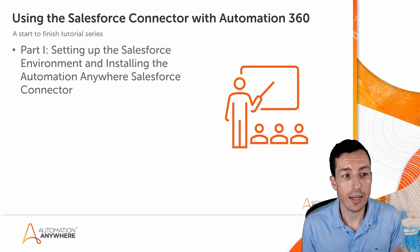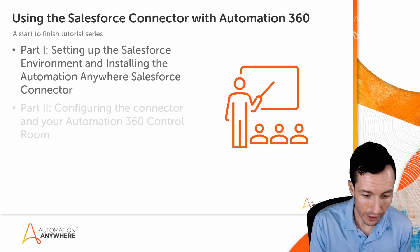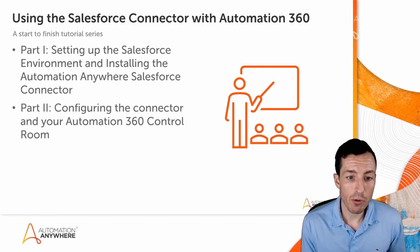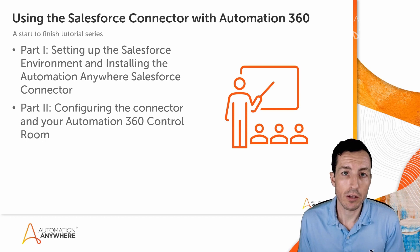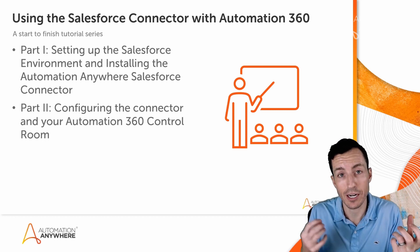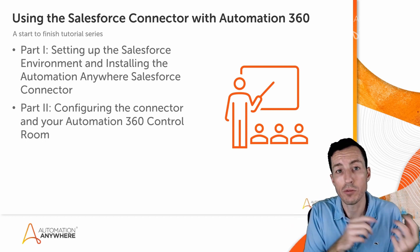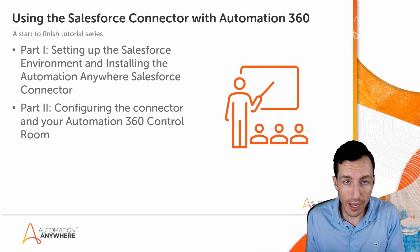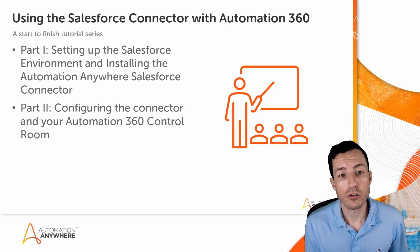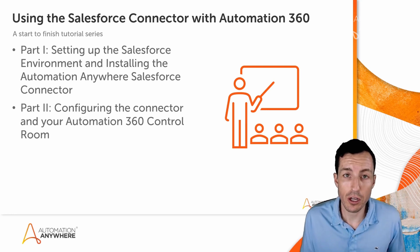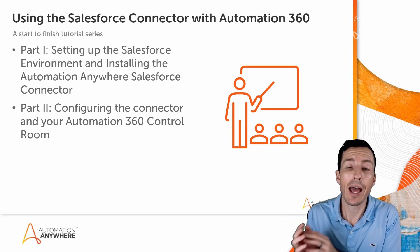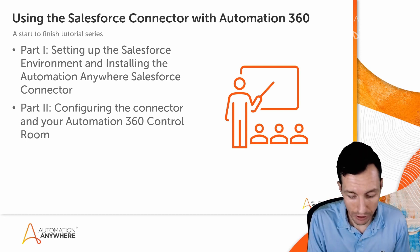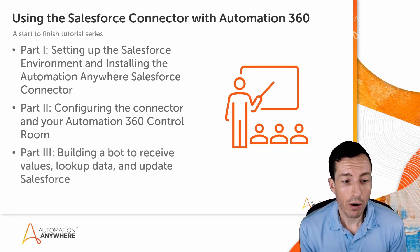The second tutorial will cover configuring the connector and setting up your Automation 360 control room. The connector needs to communicate with the control room to know which bots to run and which user account to authenticate with. We'll do all of that configuration in part two, including setting up a role and a user account on the control room side.